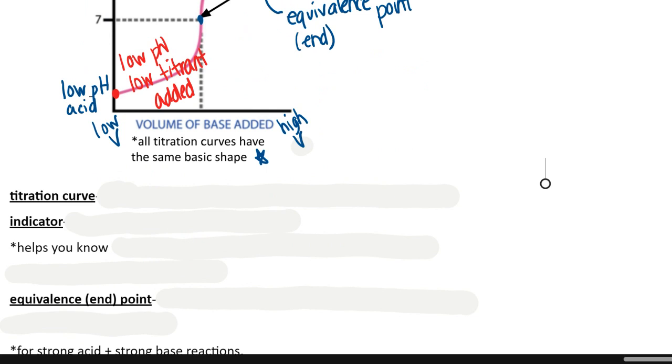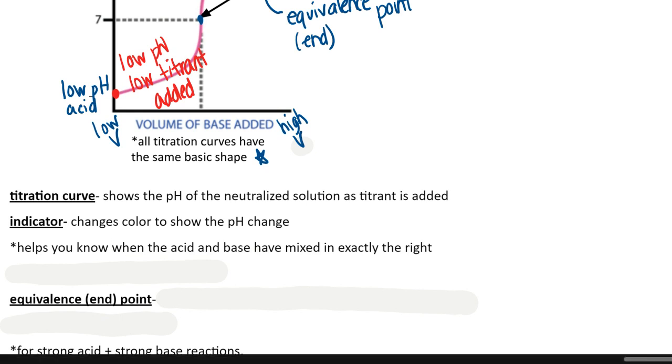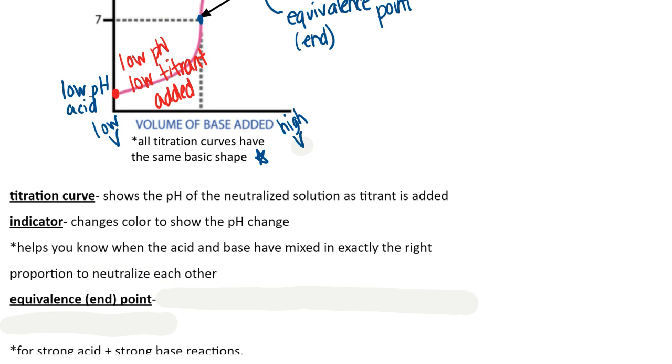So let's write some of that down. In a titration curve it shows the pH of the neutralized solution and how it changes as the titrant is added. Now the reason that that works is because we have an indicator in that beaker as well. This changes color so it shows us the pH change going on, otherwise we would have no idea what the pH is at each time. This helps us know when the acid and base have mixed in exactly the right proportion, because remember the goal is for them to neutralize. I only know that because the indicator changes color for me.